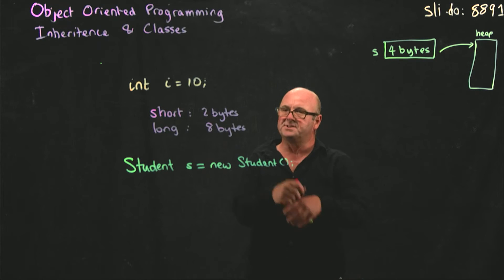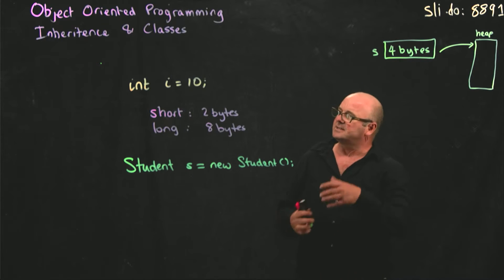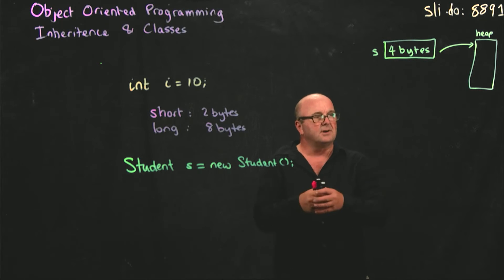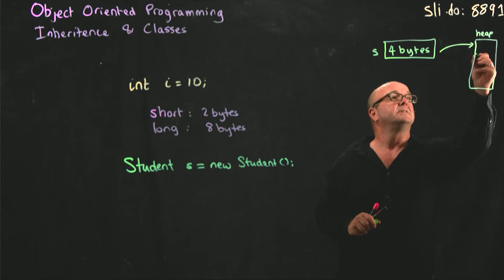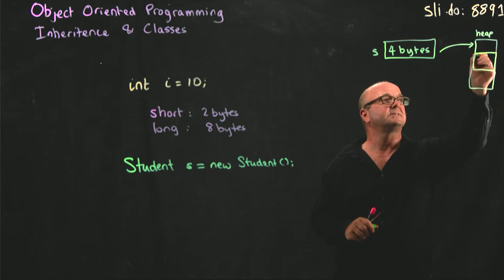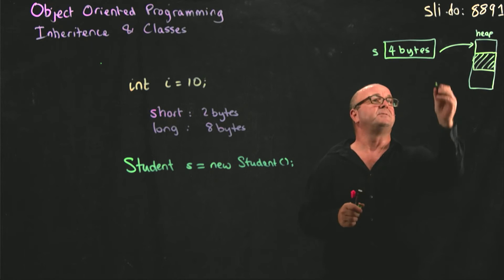So if the student class, for example, has some integers or some strings, the Java virtual machine goes through and it says, okay, I know I need five integers and ten strings and these other objects, so I can calculate how much memory I need for a student object. I can allocate on the heap a certain amount of space that's going to belong to this student, and I'm going to have a pointer that's four bytes, and that pointer points to that space on the heap.